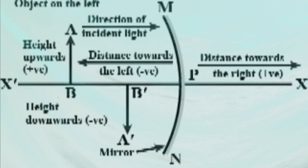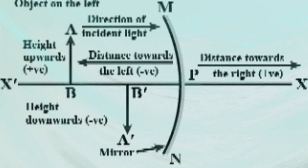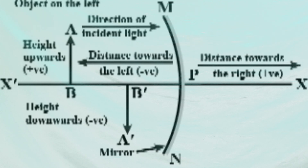The distance measured opposite to the direction of incident light is taken as negative — that means the left side of the x-axis. Distance measured upward and perpendicular to the principal axis is positive, meaning above the x-axis. Distance measured downward and perpendicular to the principal axis is negative, meaning below the x-axis. This picture helps remember the sign convention very clearly.